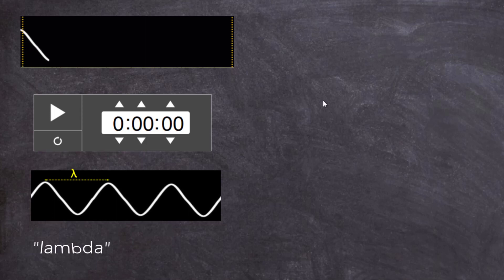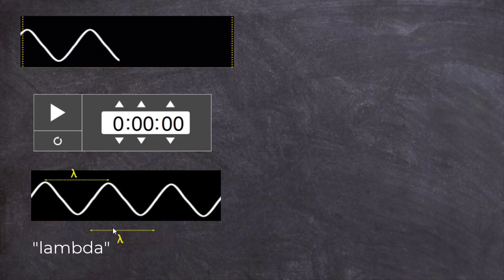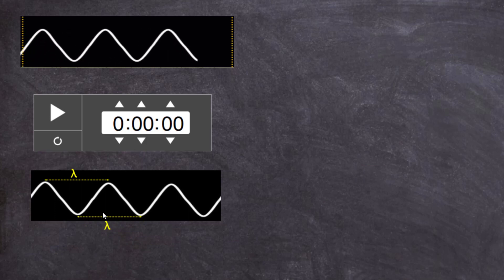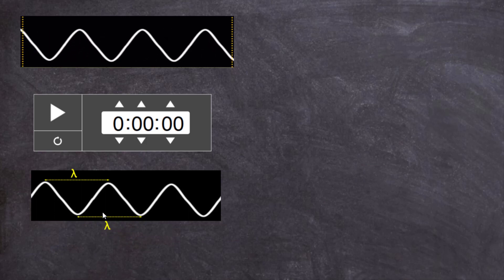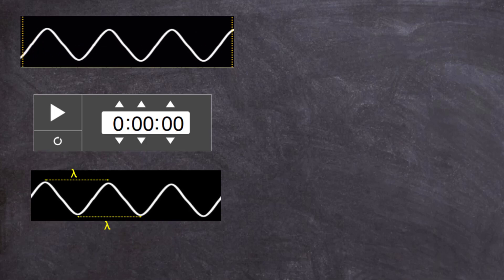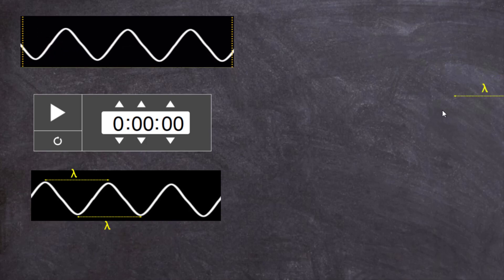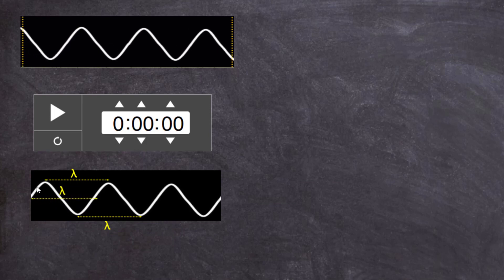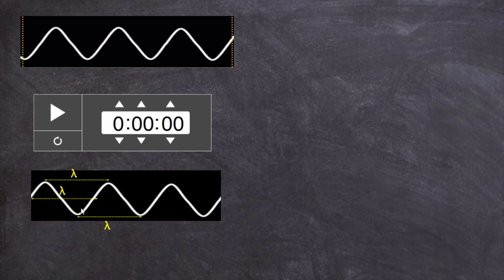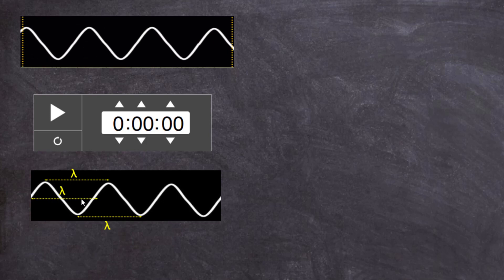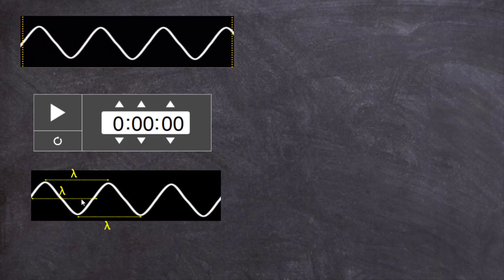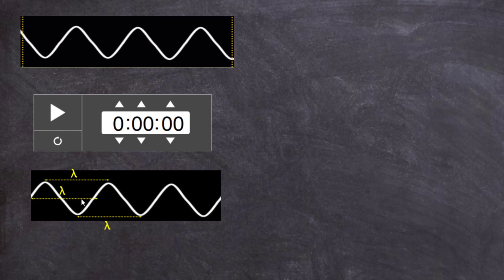We can also measure the wavelength from trough to trough — that's a wavelength as well. A third way to measure a wavelength is from one complete up to one complete down — you can see it there: one complete up and one complete down. So those are the three ways we can measure the wavelength of a wave.